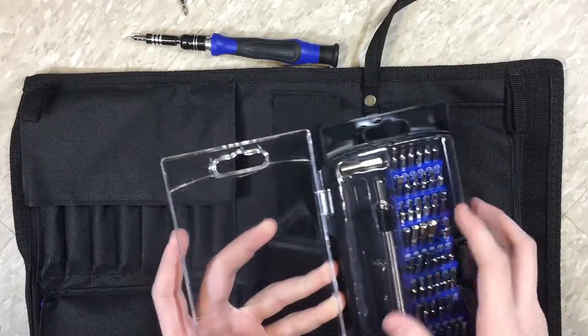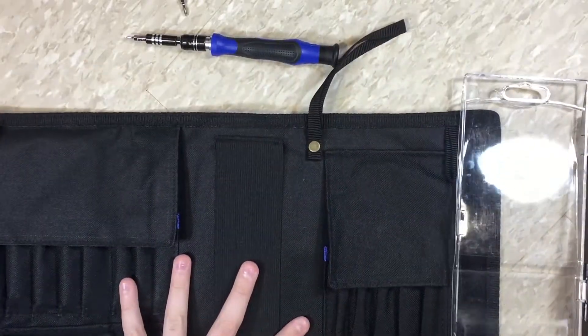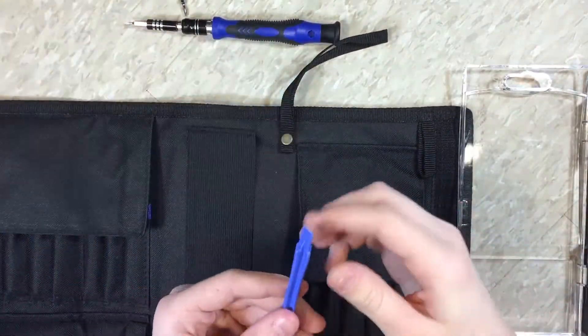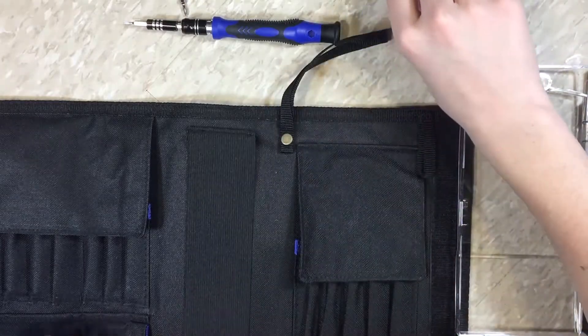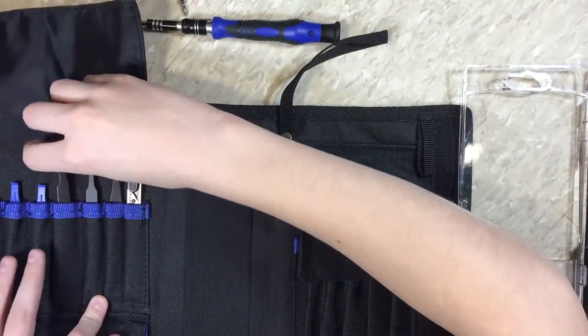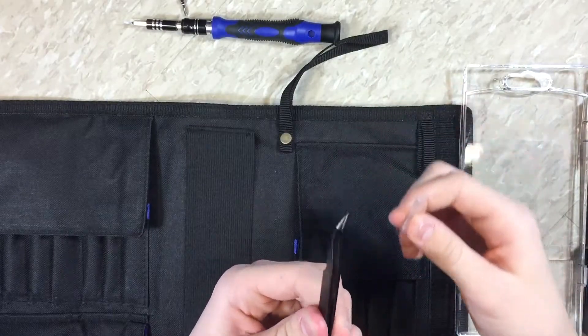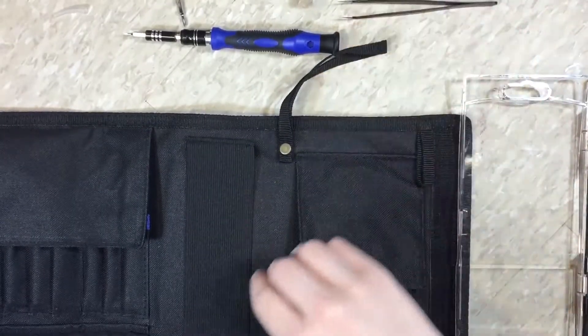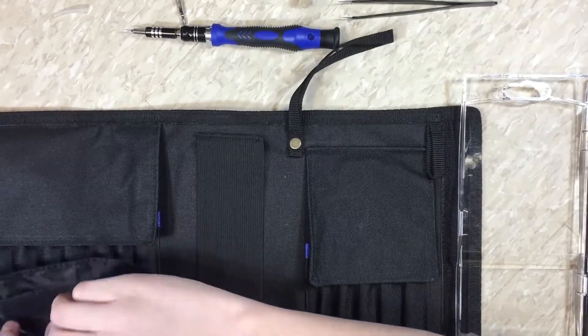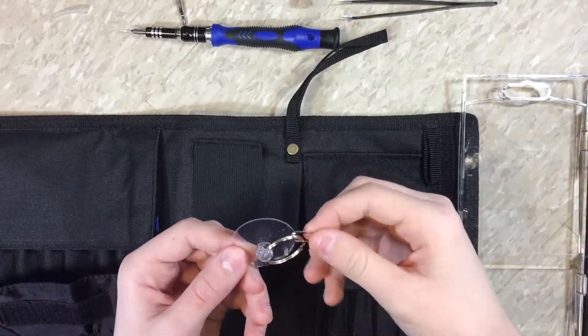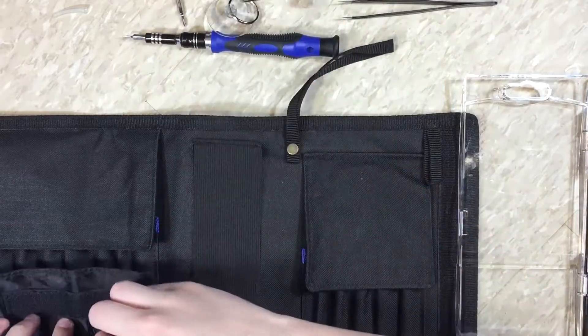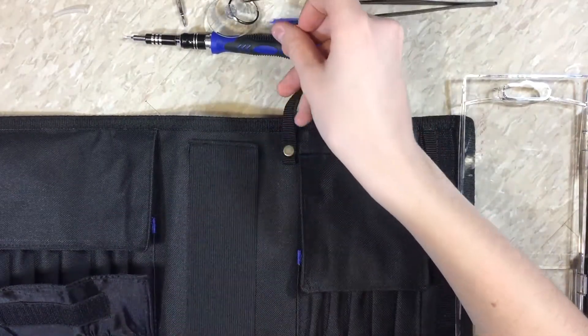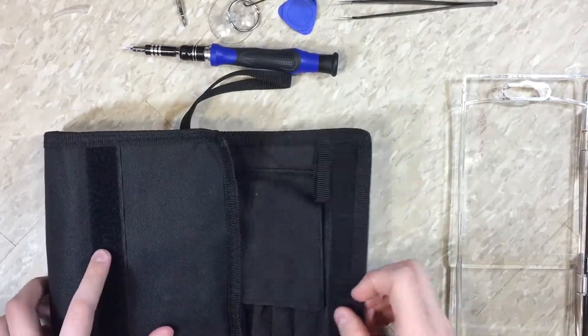I'm actually going to keep this open over here to organize my screws. We're also going to need a little plastic tool opener, some metal snips, a suction cup, and a pick. Go ahead and set this aside.